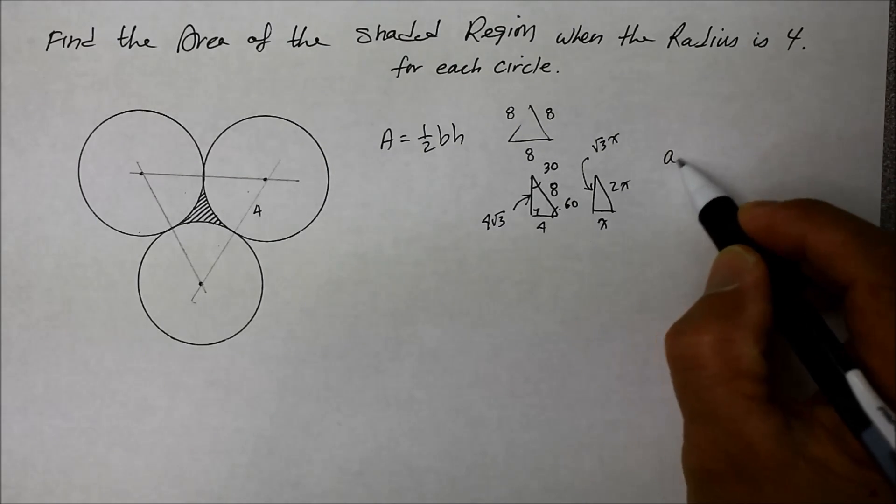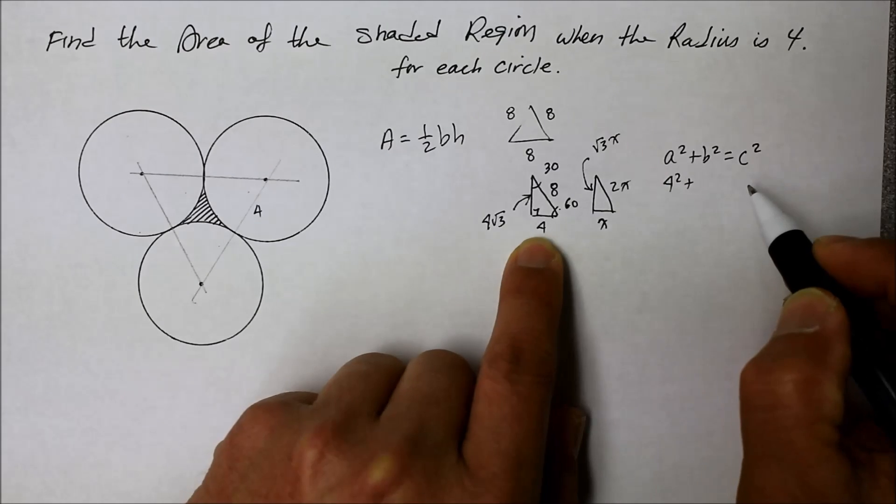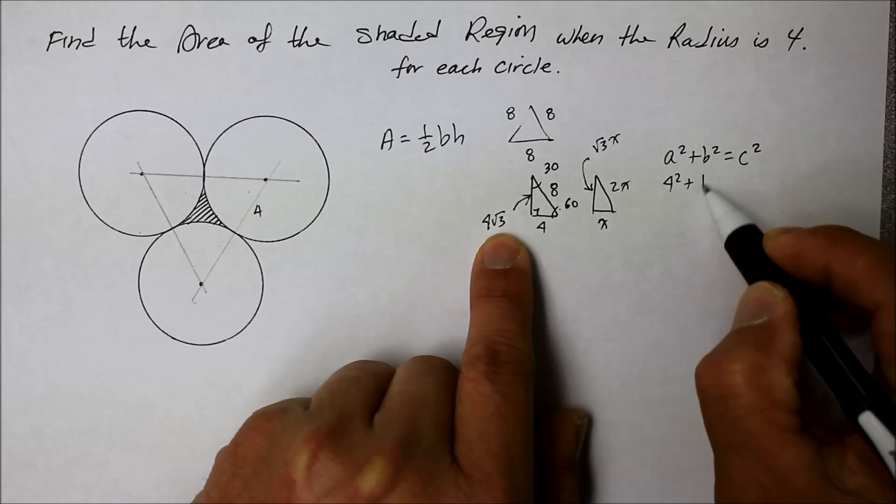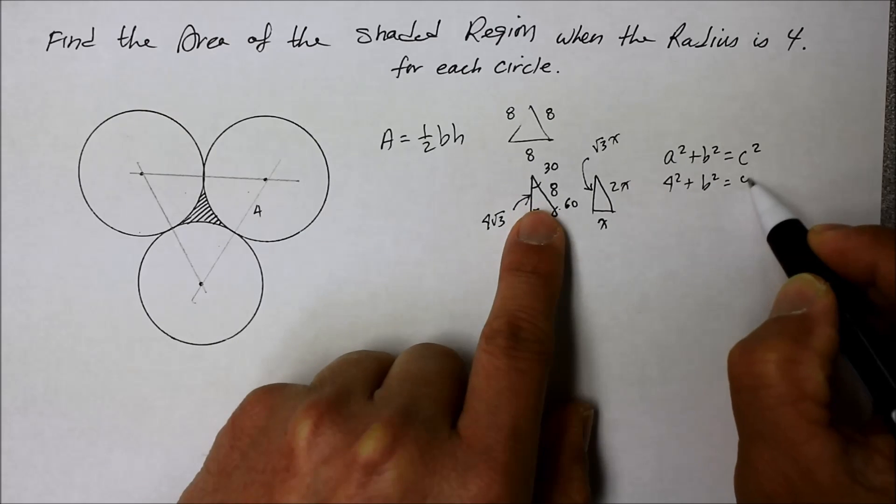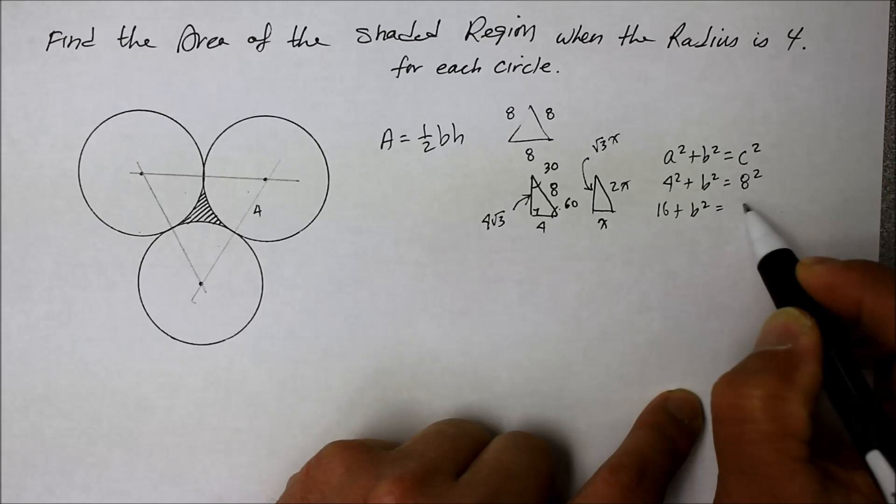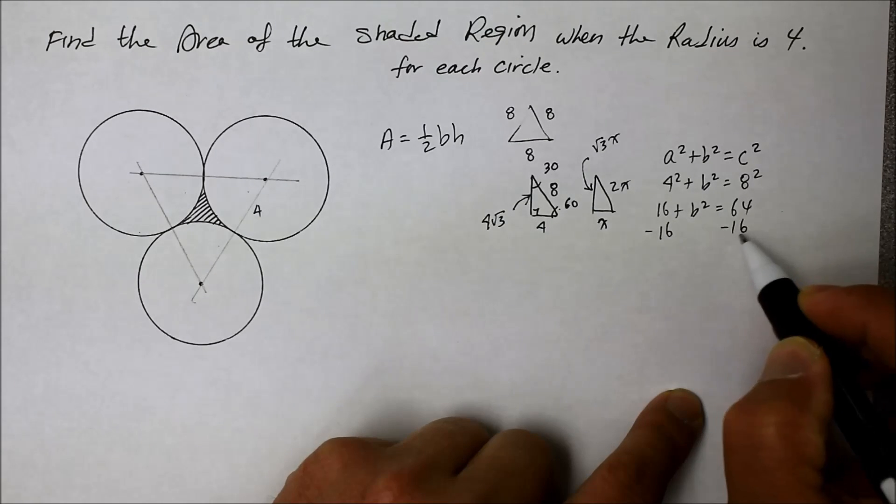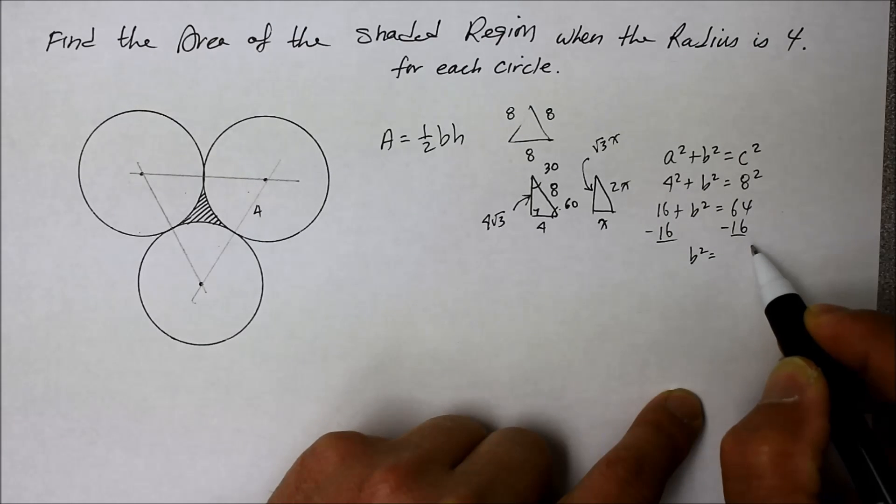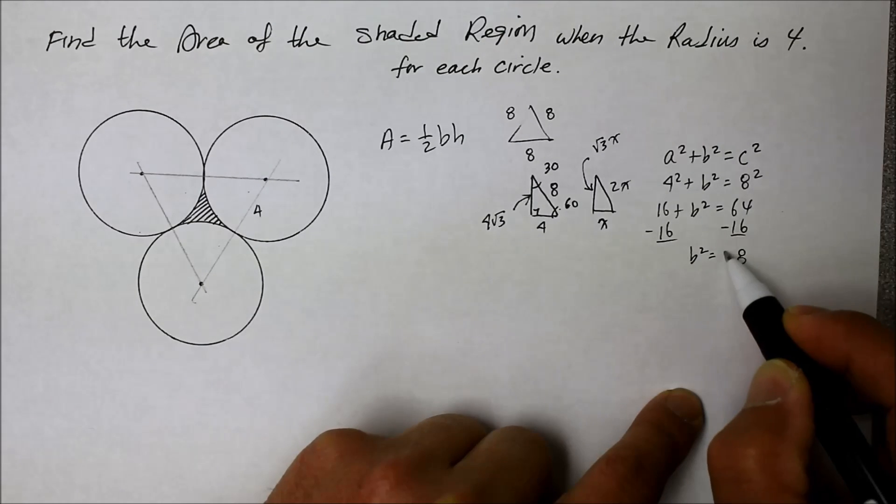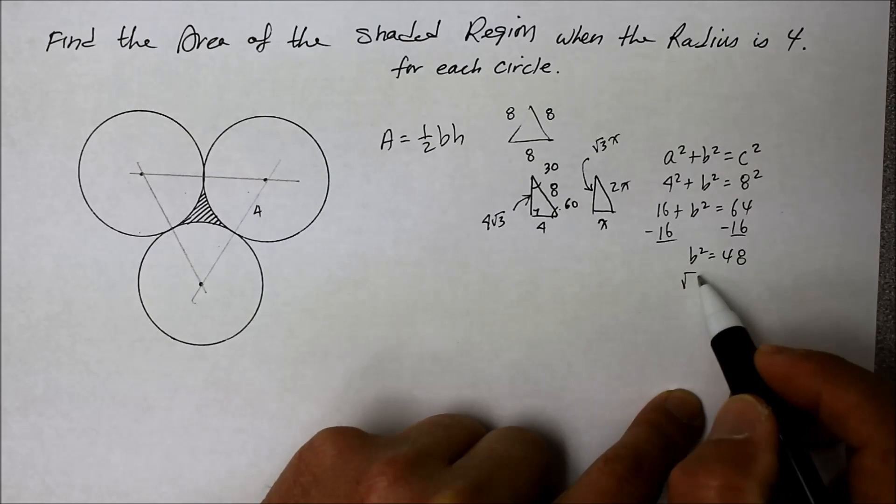Otherwise, you would have done the Pythagorean theorem. So you could have gone a is 4, b is unknown, c is the hypotenuse at 8. So that's going to be 16 plus b squared equals 64. Solve for b by using subtraction property of equality. So that's going to become 48.